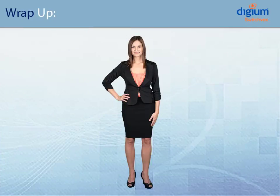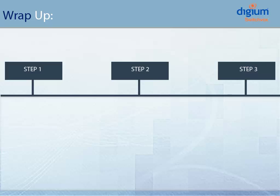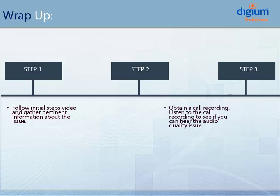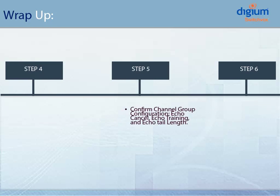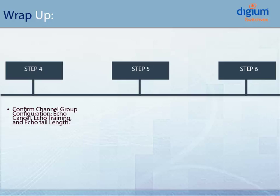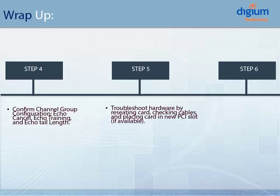I am confident if you run through all of these steps, you will be able to find the audio quality issue. Now let's run through what we have learned today. In Step 1, follow your initial steps video and gather the pertinent information about the call quality issue. In Step 2, get a call recording and listen to it to identify the issue. In Step 3, check the echo cancellation module. In Step 4, confirm the channel group configuration: echo cancel, echo training, and echo tail length. In Step 5, check the hardware by disconnecting the PRI card, checking the echo cancellation module, reseating the PRI card, and reconfiguring the channel groups within SwitchVox. In Step 6, peer the lines and run the DOTI Monitor if all else fails.